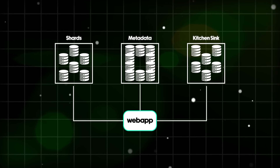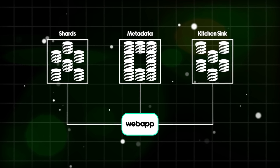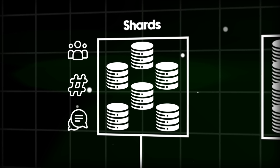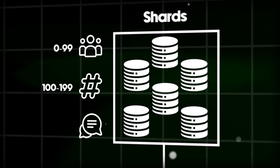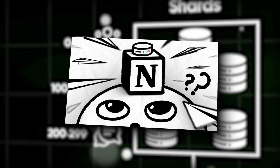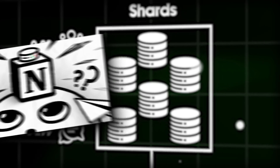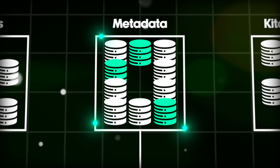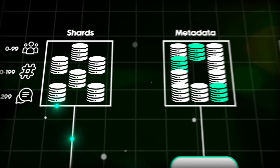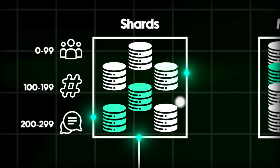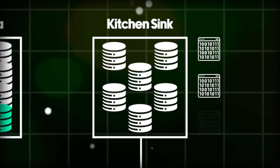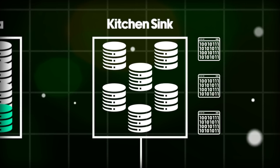All of the data from Slack was stored in three MySQL database clusters. Shards was where customers, messages, channels, DMs, and more were stored — data was partitioned and scaled horizontally based on workspace ID. Metadata was used as lookup tables to map the workspace ID to the required shard, almost like an index or table of contents. KitchenSync stored all other data not linked to a workspace ID, but required for Slack to work — like their app directory or analytics.